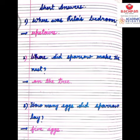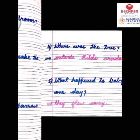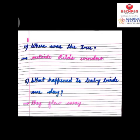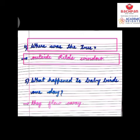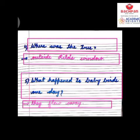Next question: how many eggs did the sparrow lay? The answer is five eggs. Now let's move to the next question — where was the tree? The tree was outside Rita's window. And the last question: what happened to the baby birds one day? The answer is they flew away.